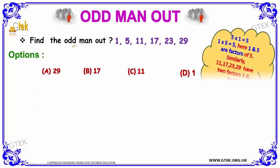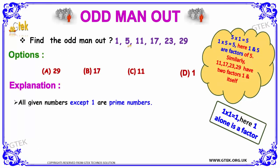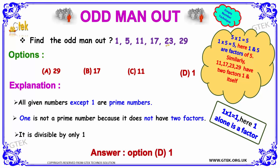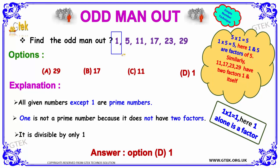Find the odd man out for the following series: 1, 5, 11, 17, 23, and 29. You can see 5 into 1 is equal to 5, and 1 into 5 is equal to 5, so we got two factors — 1 and 5 — for 5. The same thing for 11, 17, 23, and 29: they each got two factors, 1 and itself. Whereas for the number 1, it has only one factor, that's 1. So the answer — the odd man — is 1.